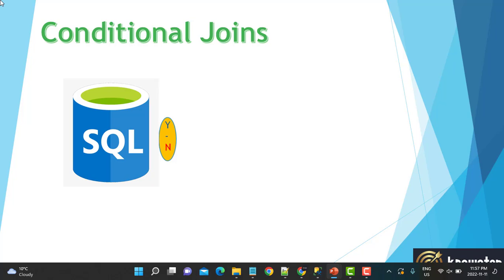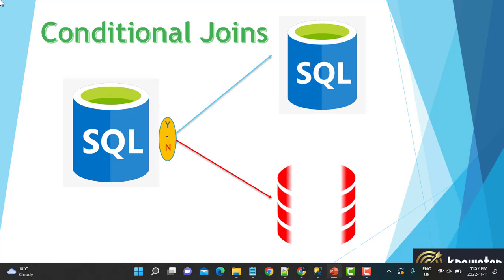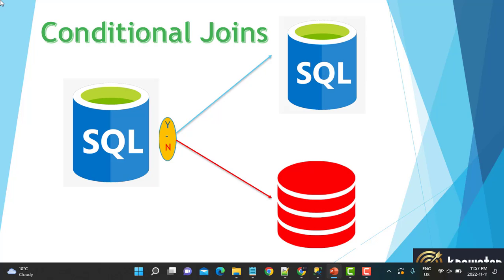Hello everyone and welcome to another SQL tutorial. Today we are going to talk about conditional joins, which means that based on a certain condition, we need to join either on table A or on table B. In particular, we are going to take an example of a conditional join based on certain column values. So let's get started.